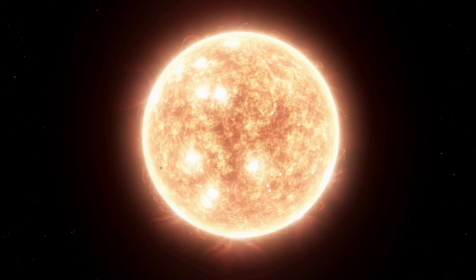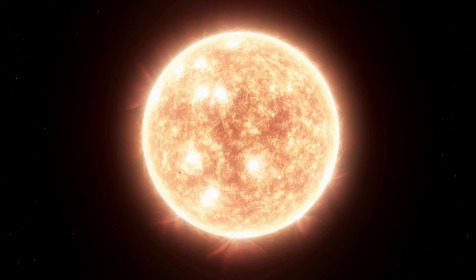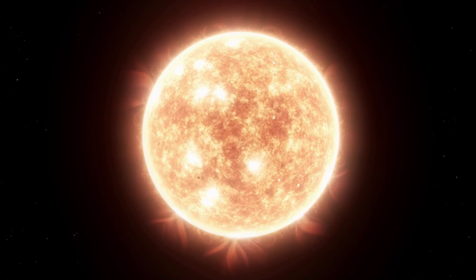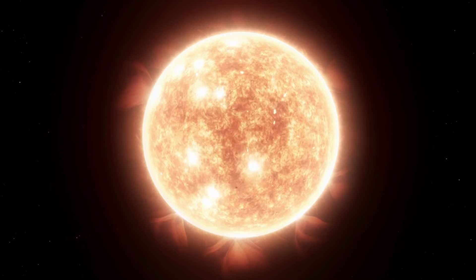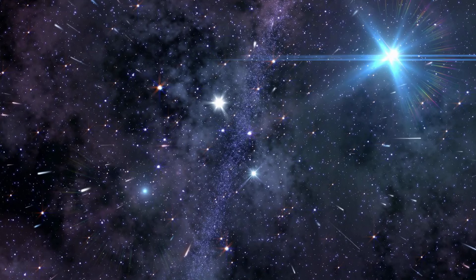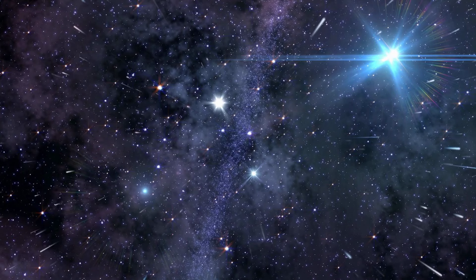During this phase, hydrogen atoms fuse to form helium in the core, releasing immense energy. Imagine our sun, a typical main-sequence star. The stability of this stage, lasting billions of years, captivates astronomers as it balances against the gravitational forces trying to collapse its mass.